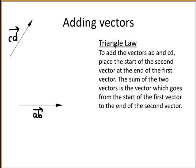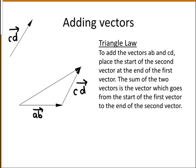To add two vectors, one way of doing this is by using the triangle law. What you want to do is place the start of the second vector at the end of the first vector. So here we'll place the vector CD. The sum of these two vectors is the vector which starts at the beginning of the first vector and ends at the end of the second vector. So this is the vector AB plus CD, and this is called your resultant vector — the sum of the two vectors AB and CD.